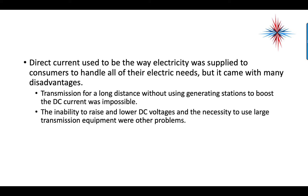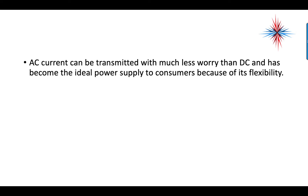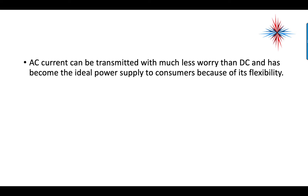Direct current used to be the way electricity was supplied to consumers to handle all their electrical needs, but it came with many disadvantages. Direct current, also known as DC, transmission for long distance without using generation stations to boost the DC current was near impossible. The inability to raise and lower DC voltages and the necessity to use large transmission equipment were other problems. AC current can be transmitted with much less worry than DC and has become the ideal power supply to consumers because of its flexibility.